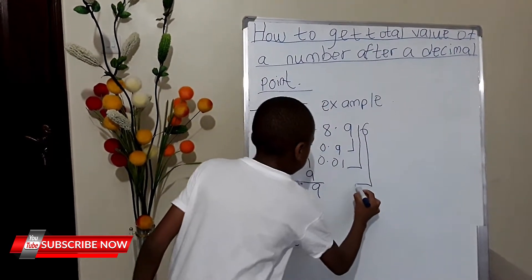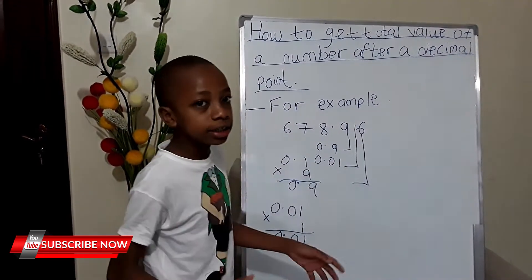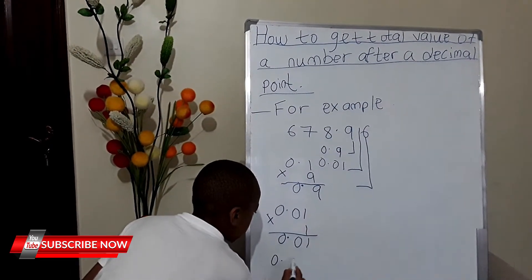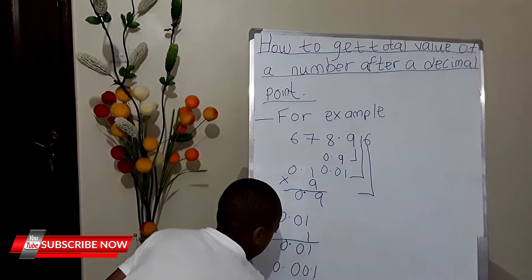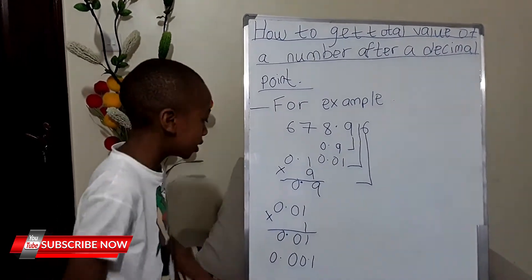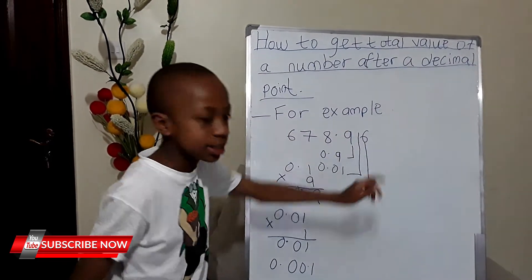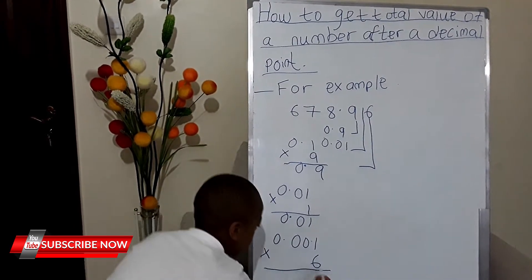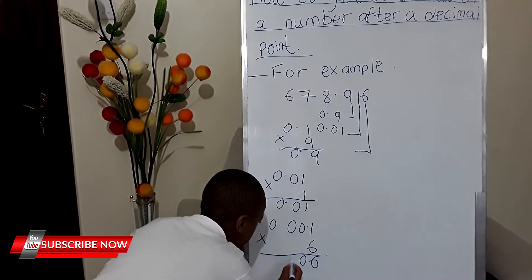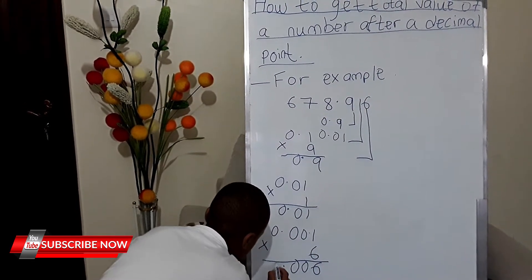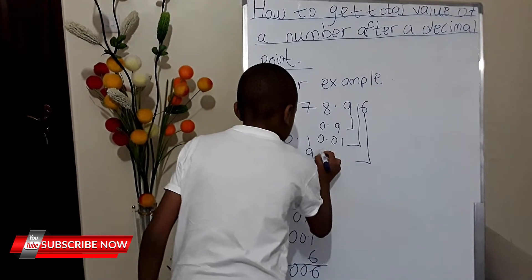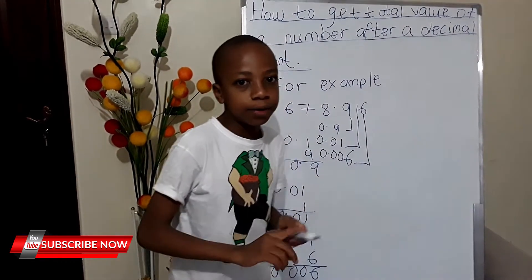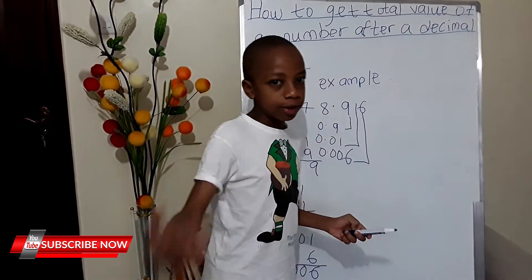Then you come to the last digit, which is 6, and 6 is in the thousandths. Thousandths is written this way: 0.001. That is thousandths. Then you multiply the thousandths by 6. So the total value here is 0.006.